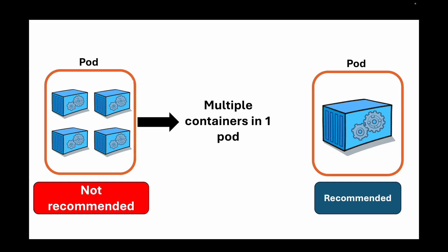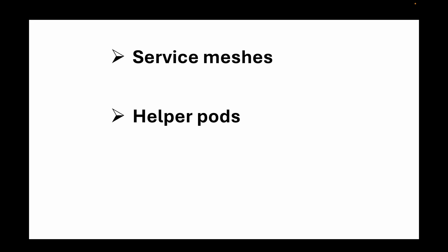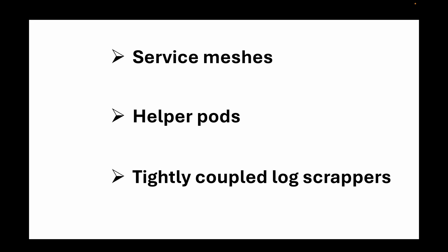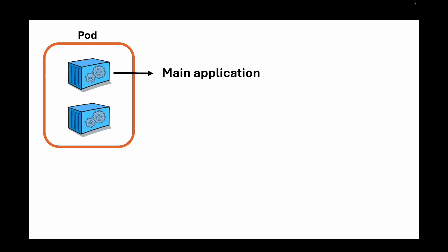There are times where multi-container pods are useful — for example, service meshes, helper pods, or a tightly coupled log scraper. An example might be transforming log files into a format accepted by an external log store, so you have your main application running as a container alongside a helper container in one single pod. That helper container aggregates logs and exports them in the correct format. But generally, multi-container pods are not recommended.